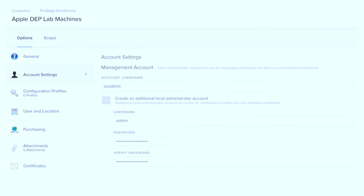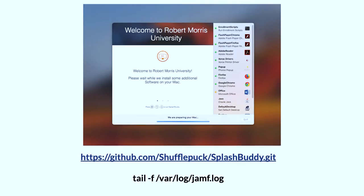In the PreStage Enrollment we set up the JSS admin account — the account Jamf uses to do its work — and another management account on lab machines so we can log in if needed. After selecting the time zone, you can log into that management account and we've set up a nice GUI for our help desk employees, picked up from a Jamf Marketplace session last year. It parses the Jamf log to give a nice GUI showing where policies are in the enrollment process — good for help desk staff who want visibility.